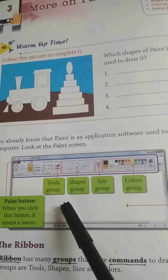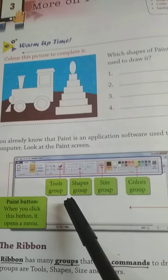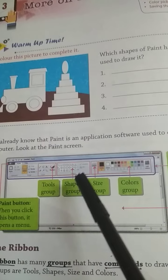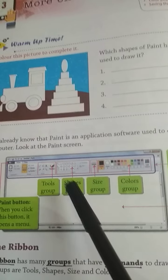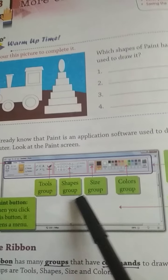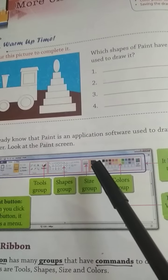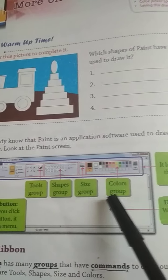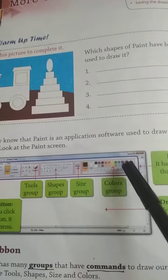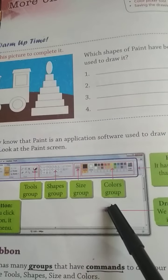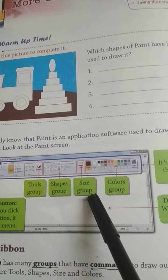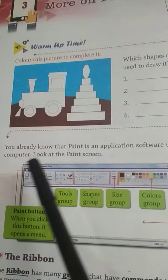Uske baad hai aapka tool group. Tool group mein aapka text hai, brush hai, magnifier tool hai. Aur shape group mein aapke triangle, square, circle, line — ye saare shapes hain. Size group mein aapki thick aur thin alag-alag sizes hain. Aur color group mein alag-alag colors hain jisse aap choose karke color fill karte hain. Ye sab — tool group, shape group, size group, color group — kis mein aata hai?